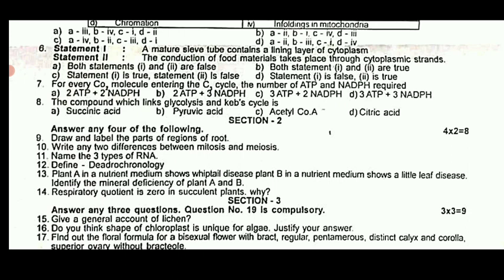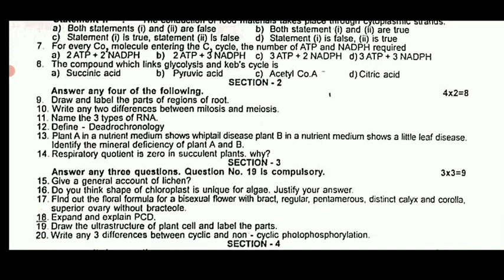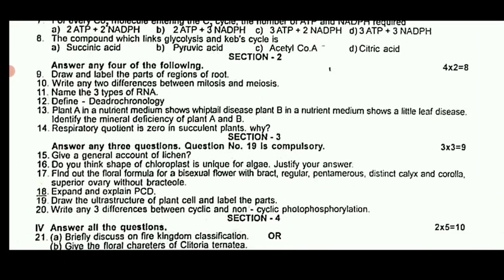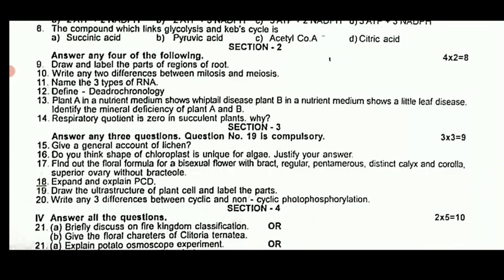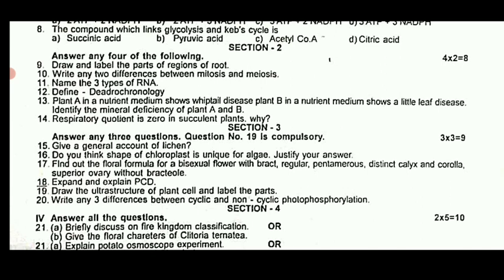This is a bookback question. The respiratory question is about the succulent plant — it is a bookback question in the category of important bookback questions. Next, the 5-mark and 3-mark category question: Do you think the shape of chloroplast is unique for all? Justify your answer. Find out the floral formula for bisexual flowers with bract, regular, pentamerous, distinct calyx and corolla, and superior ovary.